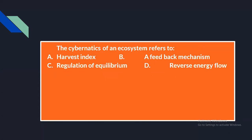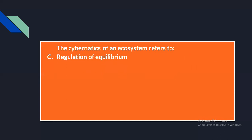The next question: the cybernetics of an ecosystem refers to — option A: harvest index, option B: feedback mechanism, option C: regulation of equilibrium, option D: reverse energy flow. This is an important question. The cybernetics of an ecosystem refers to the regulation of equilibrium.